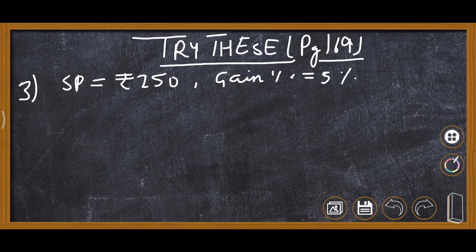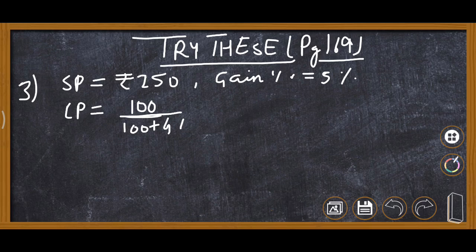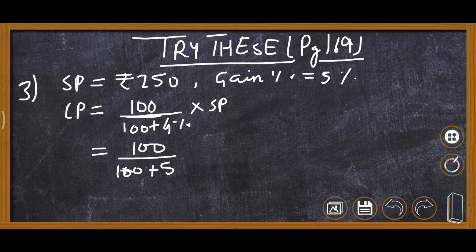Now we apply the formula. CP = 100 upon (100 plus 5), multiplied by SP. That is: 100 upon 105, multiplied by 250. Gain percent is 5, so 100 plus 5 is 105, and SP is 250.